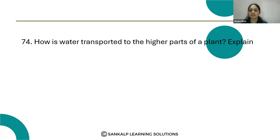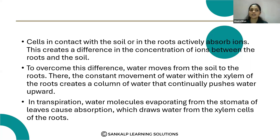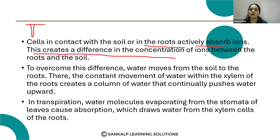That is because of the concentration difference — the ion concentration. The cells in contact with the soil, or the roots, actively absorb the ions. This creates a difference in the concentration of ions in the root and the soil. So here in the roots there is more concentration of ions, but in the soil there are very few ions.